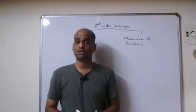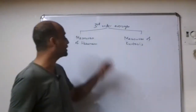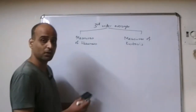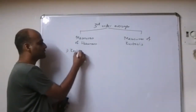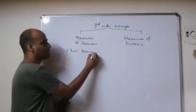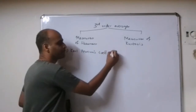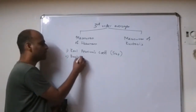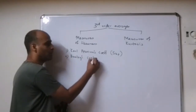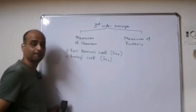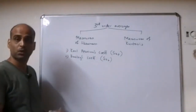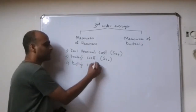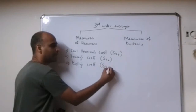Now we will talk about measures of skewness and kurtosis, that is the third order averages. The first measure of skewness is Karl Pearson's coefficient of skewness, denoted by SKP. The second is Bowley's coefficient of skewness, denoted by SKB. The third one is Kelly's coefficient of skewness, denoted by SKK.